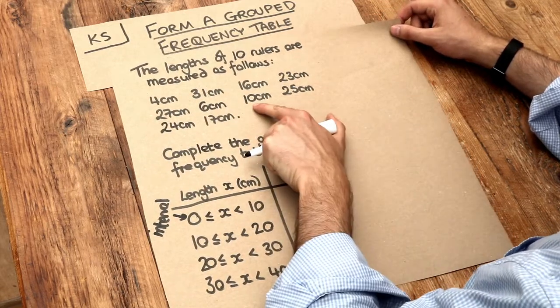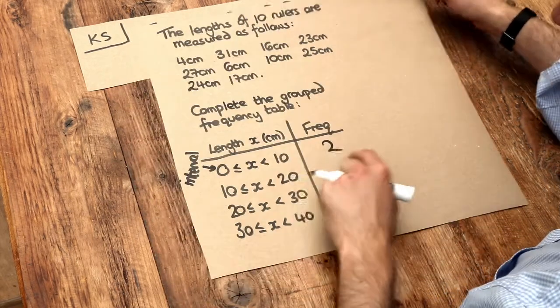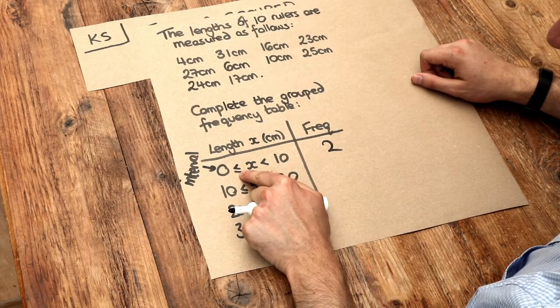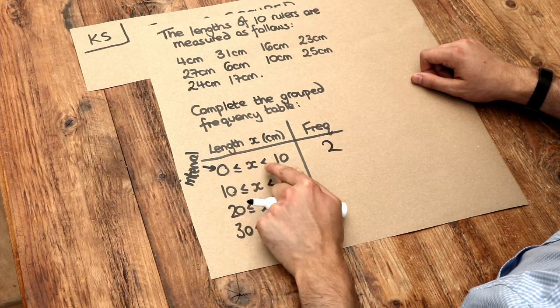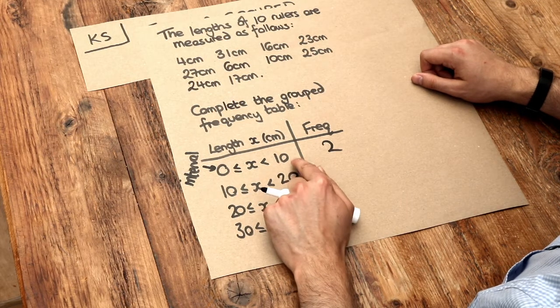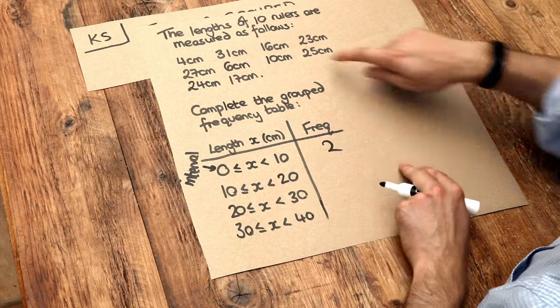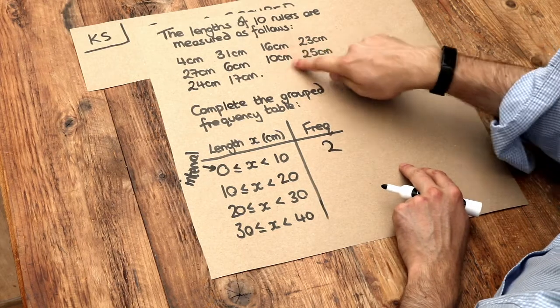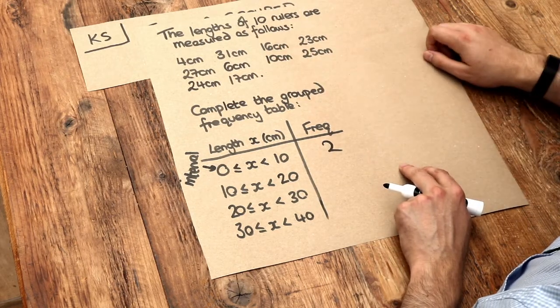And notice we're not going to include that 10 centimeters, because can you see that our length here can be anything greater or equal to 0, but it has to be less than 10. Now if we said less than 10, that doesn't include 10 itself, so we're not going to include this ruler of 10 centimeters long.